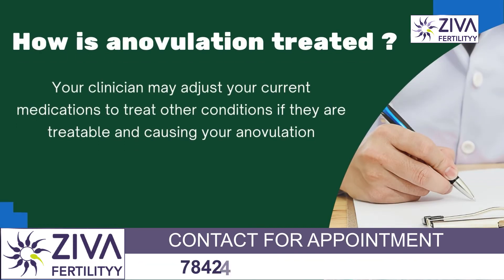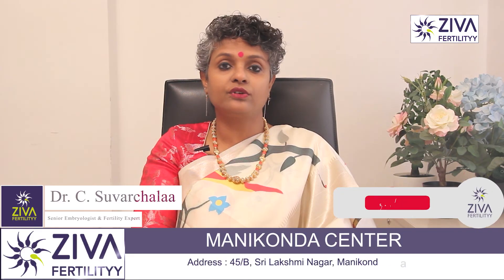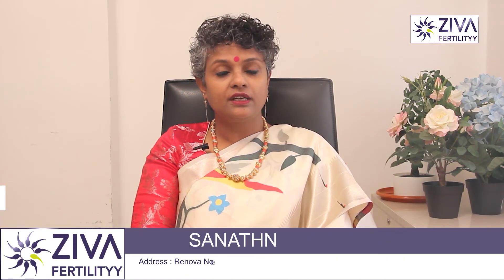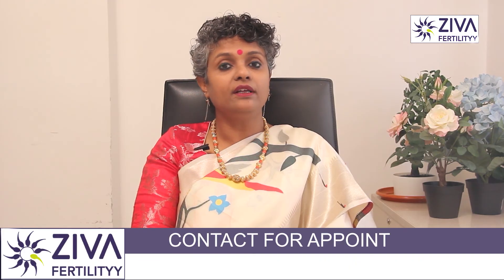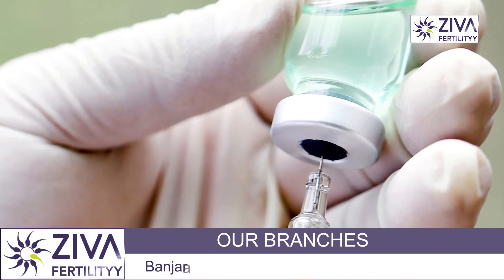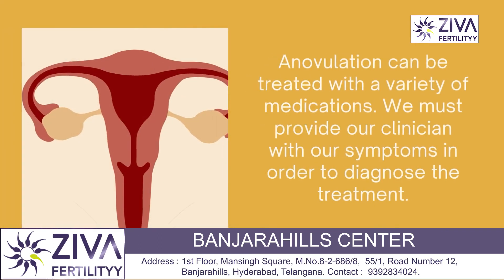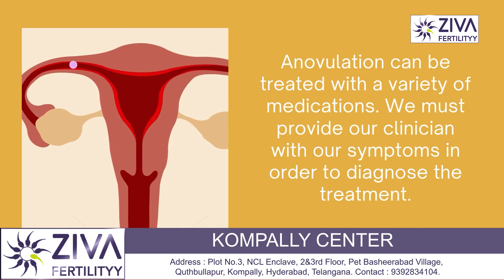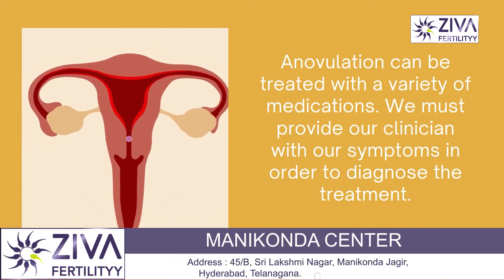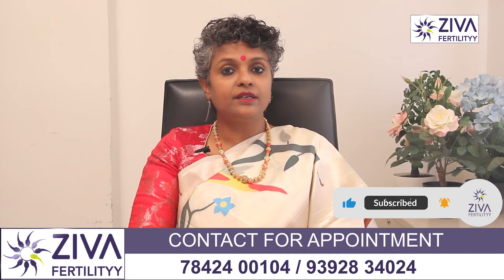Adjusting current medications is another option — some medications such as antiepileptic drugs or antipsychotic drugs can cause anovulation. If you are trying to conceive, your clinician might adjust your current medications to try to treat your anovulation. Clomiphene citrate is a medication that helps correct ovulatory irregularities. There is also human chorionic gonadotrophin injection, a hormone that causes your ovary to release an egg — a synthetic form can be injected to help treat anovulation. There are many medications to help you deal with anovulation, and bringing your signs and symptoms to your clinician can help them diagnose the reason and put you on the right path to treatment.